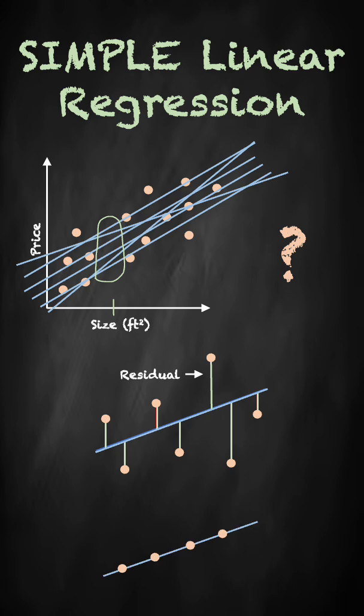To convince you, imagine we have points that form a straight line. The best fit line to those points goes through all the points, so the residuals for each point will be zero, since there's no distance between each point and the line.